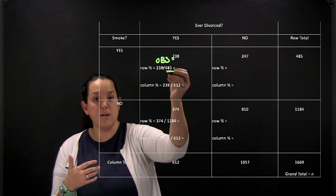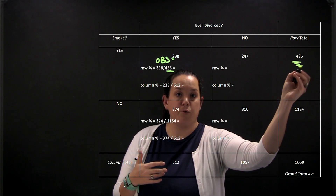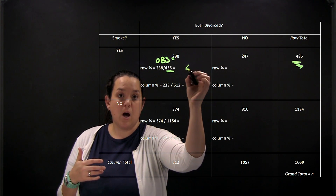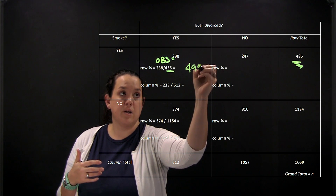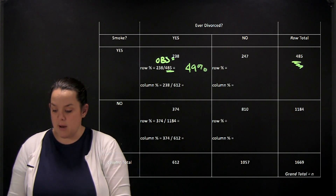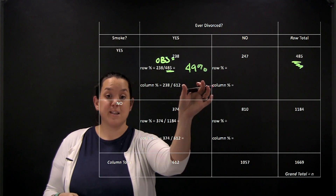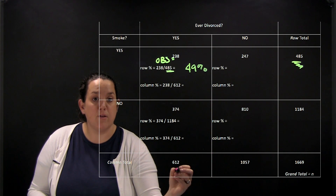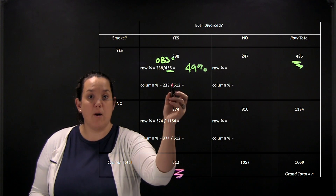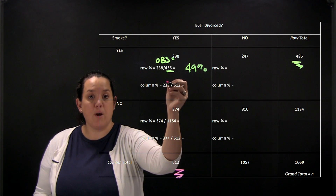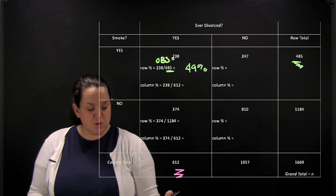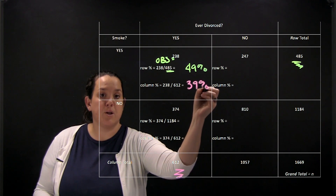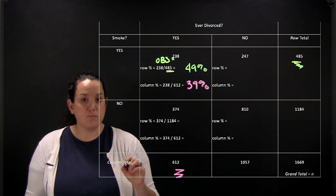For row percent, we have 238 divided by 485, which is the total for the row, giving a row percent of 49%. When you move to calculate a column percent, it's based on the total number of observations for the column, so the denominator for this cell is 612. So 238 is the observed count — the numerator — divided by 612, which is the column total, giving a column percent of 39%.